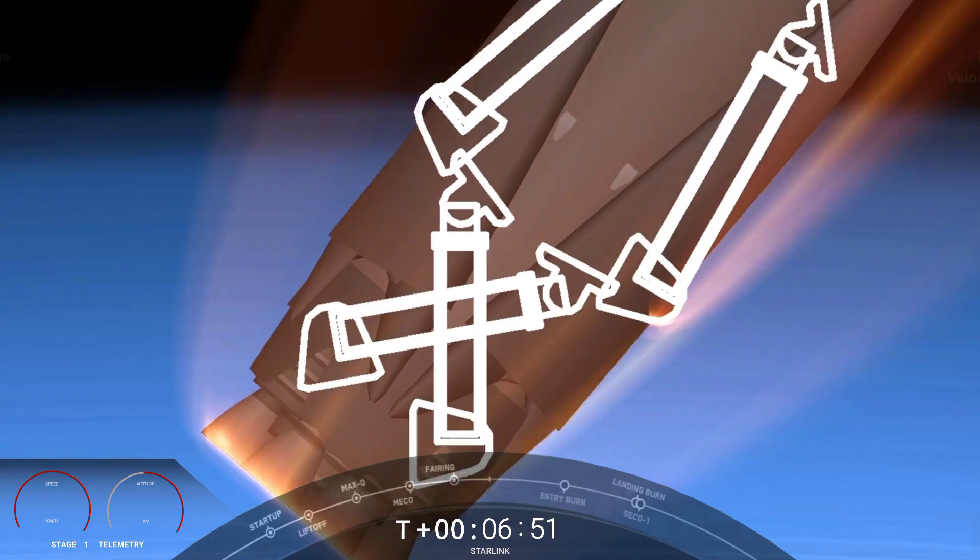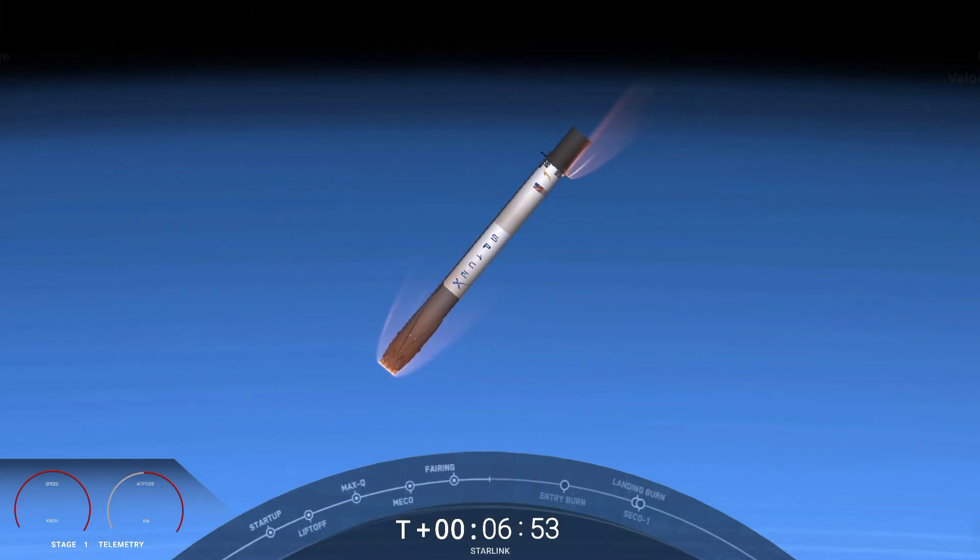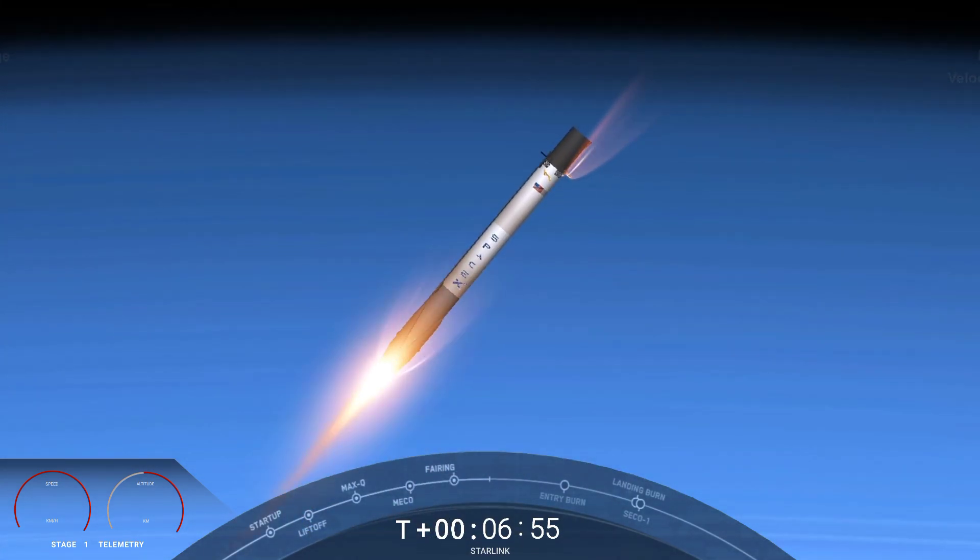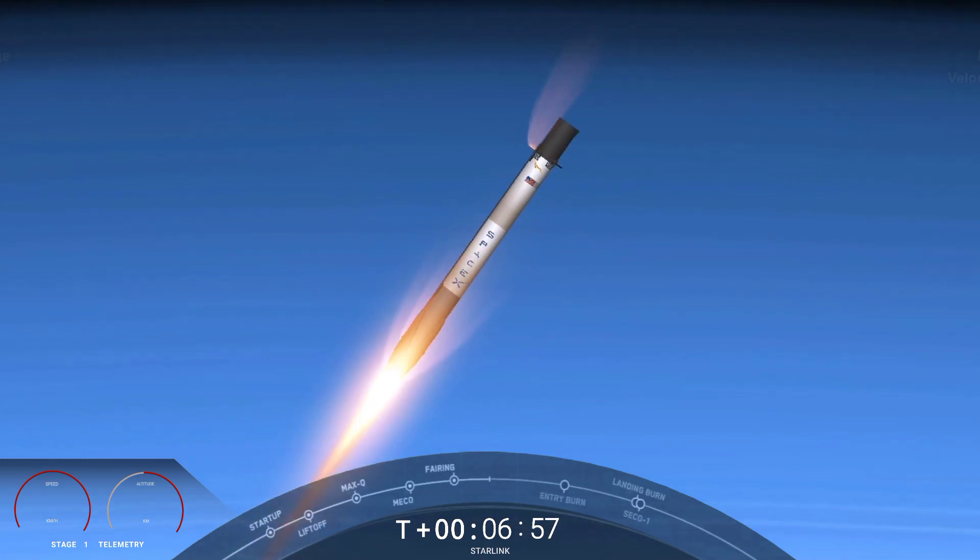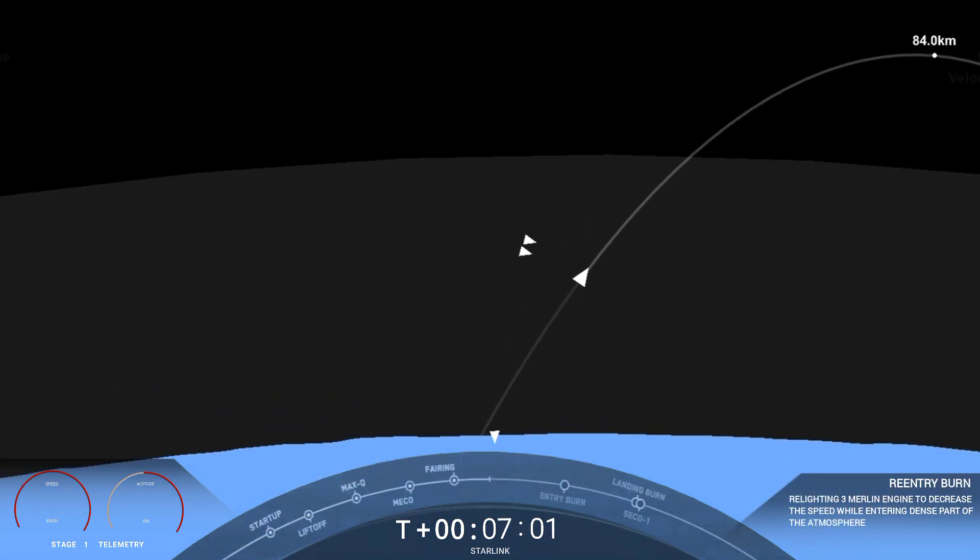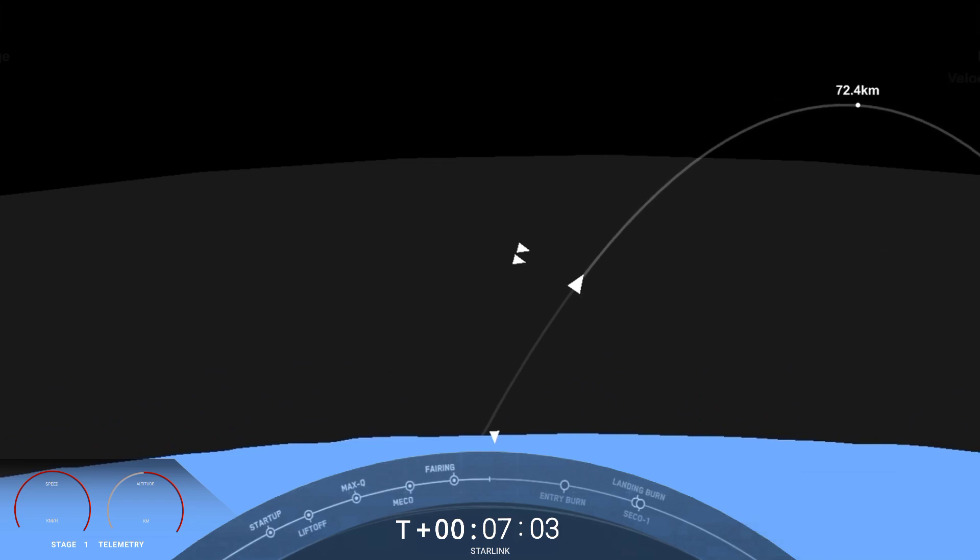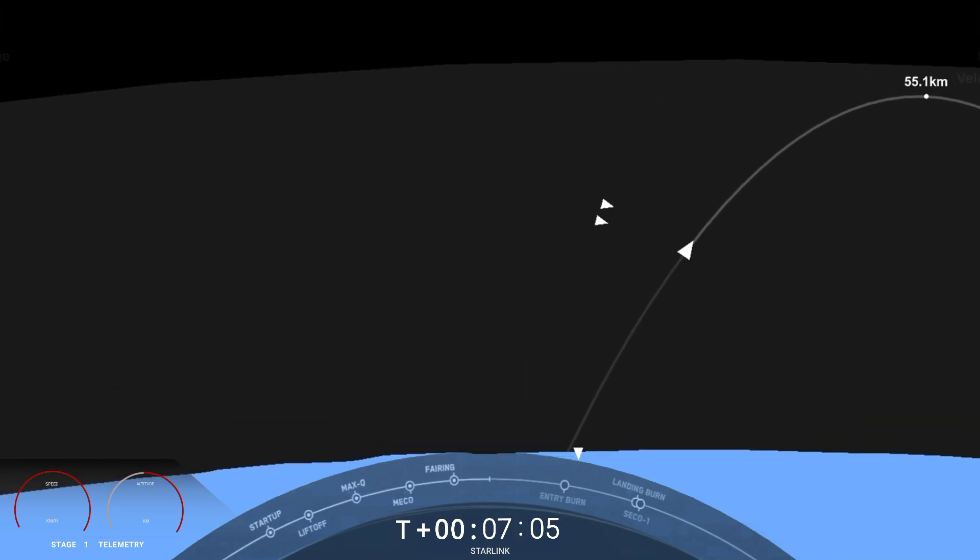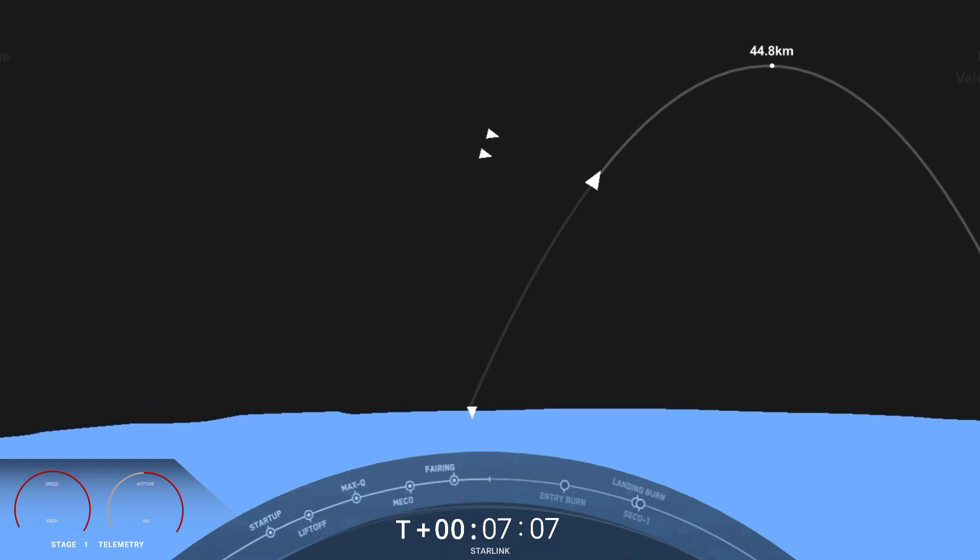Stage one entry burn startup. You can see on screen, three of our nine engines on the first stage have relit and are currently slowing down that booster. This burn is expected to last about 20 seconds. Stage one entry burn shutdown. That is a successful entry burn.